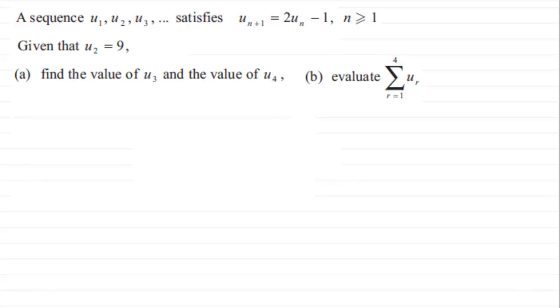Welcome back if you had a go. So first of all then, what we've got is a sequence u₁, u₂, u₃... that satisfies this particular recurrence relationship u_{n+1} = 2u_n - 1, where n is greater than or equal to 1, and we're given that the second term in the sequence u₂ is equal to 9.